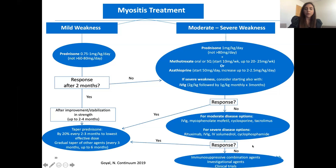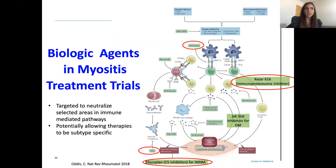I look for a treatment response that may take one to two months, trying to see any signal of improvement before considering other agents. If there aren't treatment responses to standard medications, I'll turn to mycophenolate, cyclosporine, or tacrolimus. For very severe disease I think about using rituximab or IV solumedrol. If I don't see a slope of improvement, this is when I start thinking about combining agents or moving to newer agents in clinical trials, because there may be better agents out there for patients with refractory conditions.